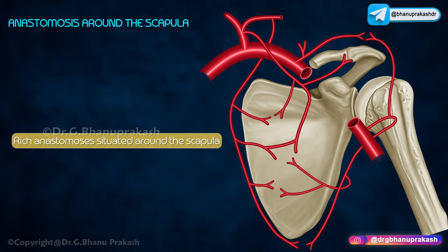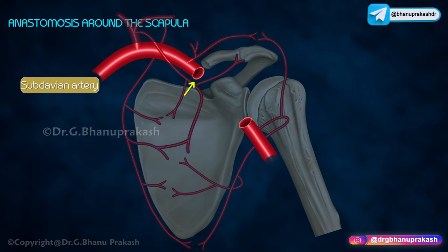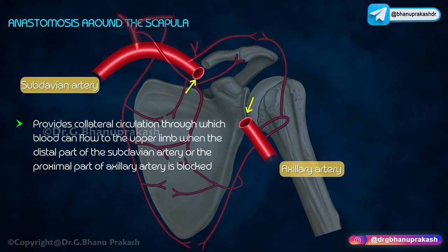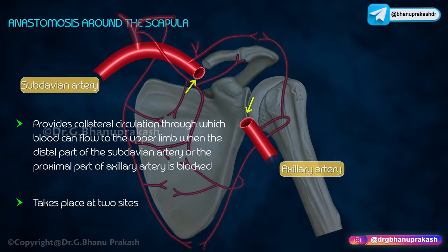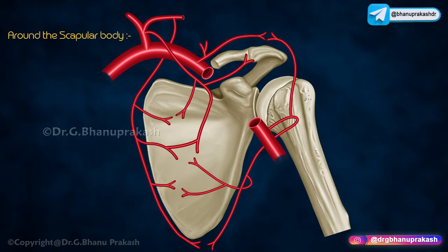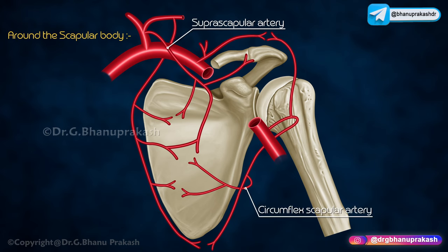The anastomosis around the scapula is a rich anastomosis between branches of the first part of the subclavian artery and the third part of the axillary artery. It provides collateral circulation through which blood can flow to the upper limb when the distal part of the subclavian artery or the proximal part of the axillary artery is blocked. It takes place at two sites. At the scapular body, anastomosis occurs between the suprascapular artery (a branch of the subclavian artery) and the circumflex scapular artery (a branch of the third part of the axillary artery).